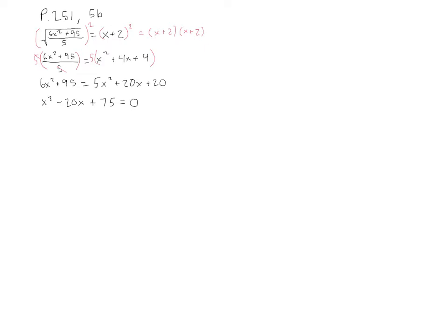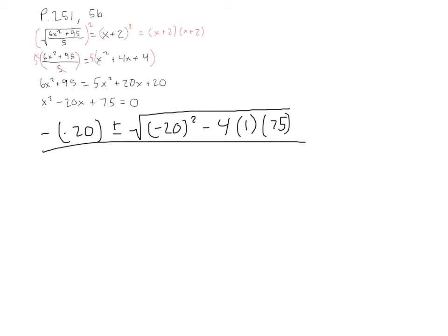So, negative b is negative negative 20 plus or minus the square root of negative 20 squared minus 4ac, which is 1 times 75, all over 2a, which is 2 times 1. Now this becomes negative negative 20 is positive 20, plus or minus the square root of negative 20 squared is 400. 4 times 1 times 75 is 300, so minus 300, all over 2.